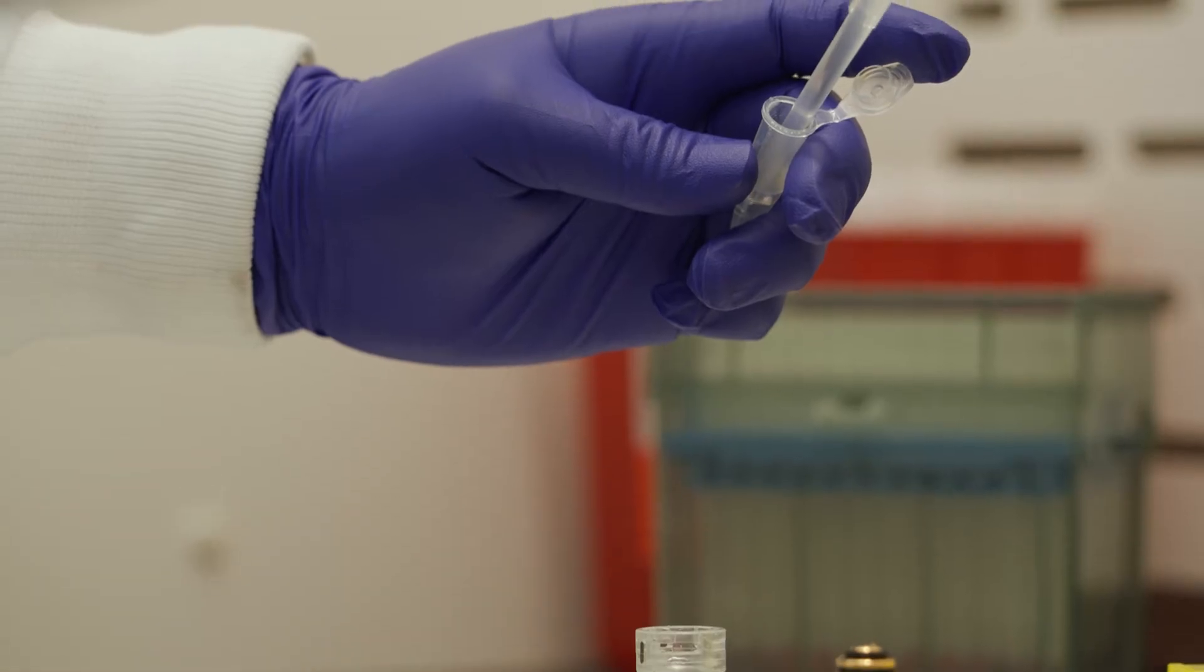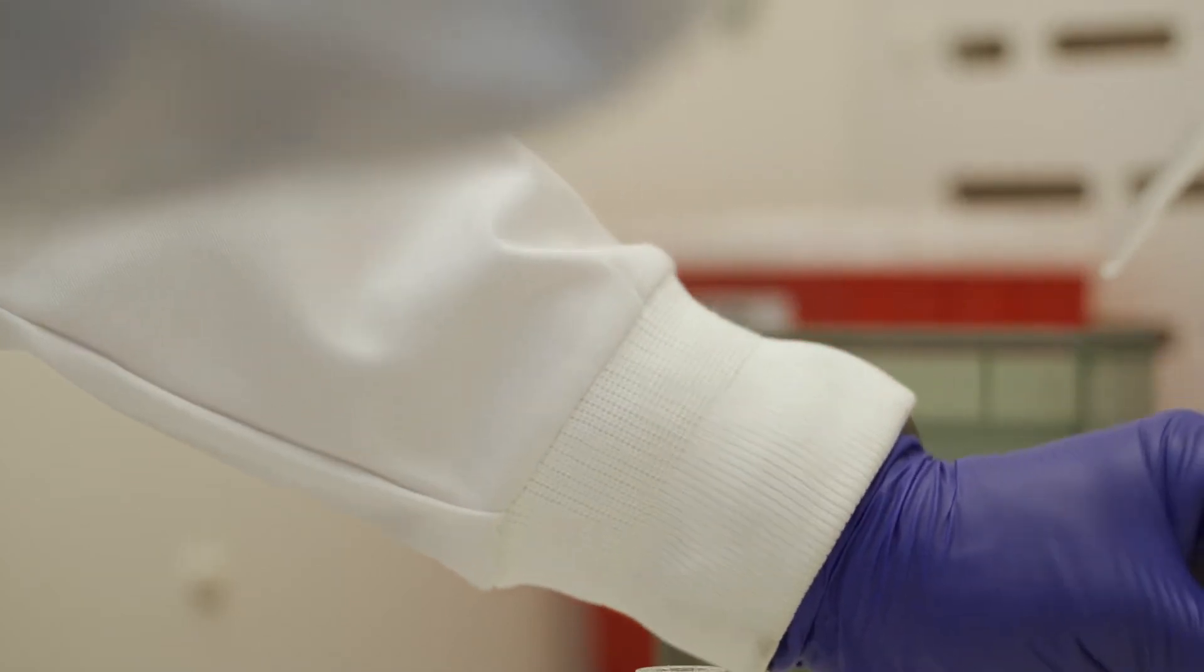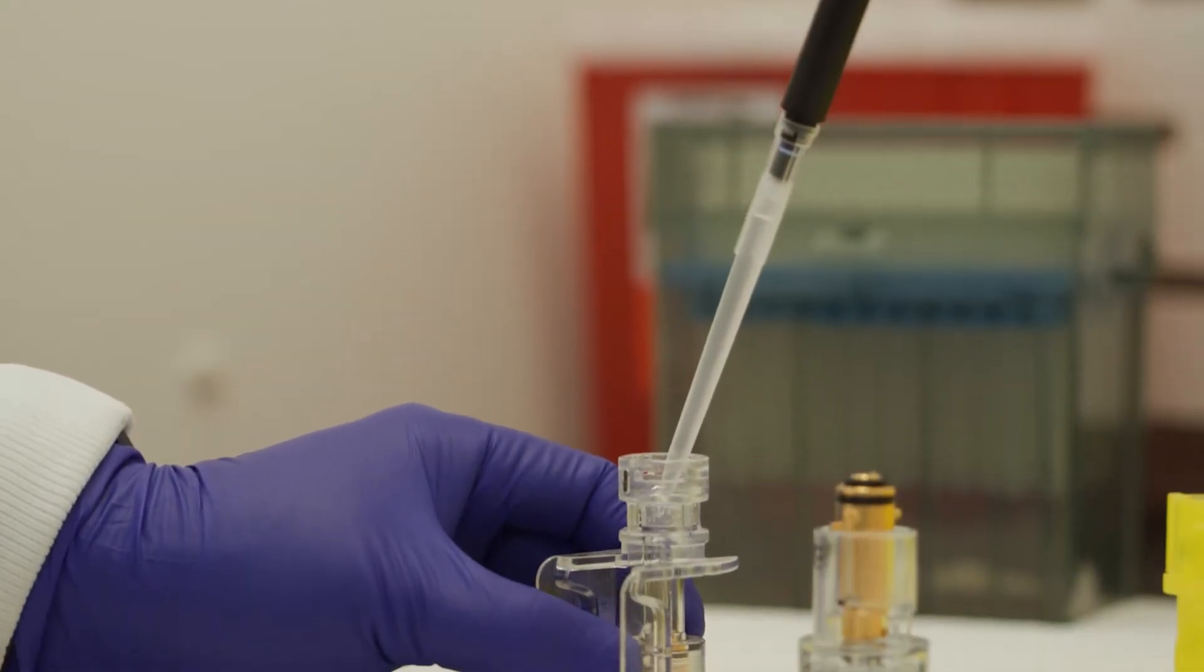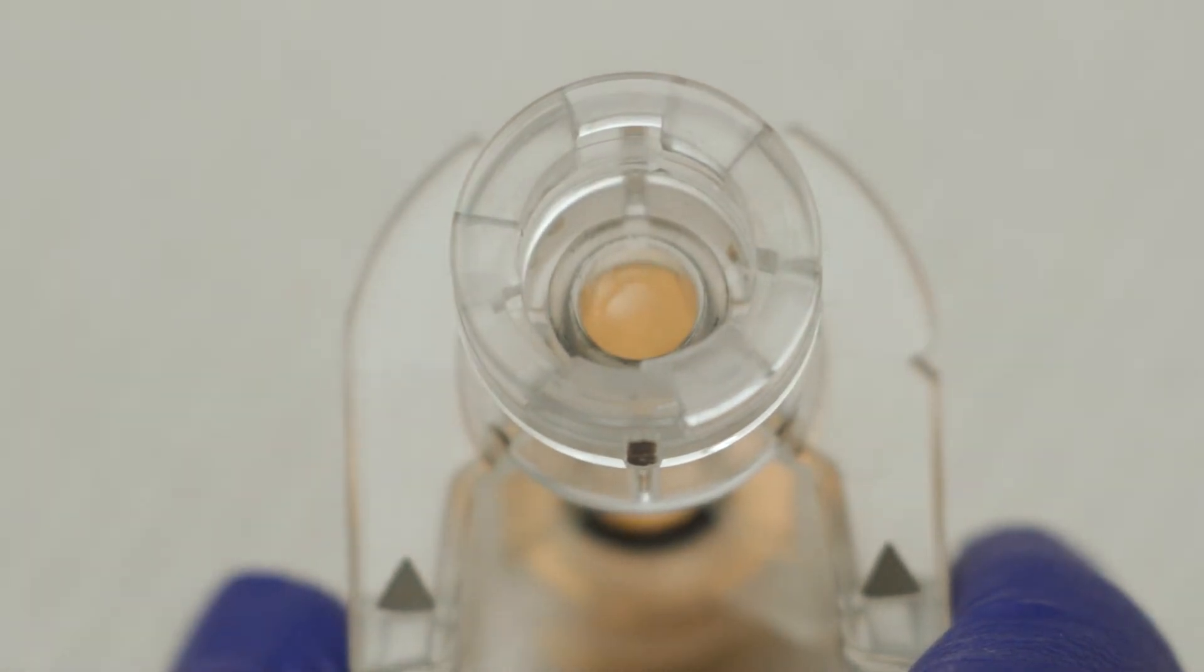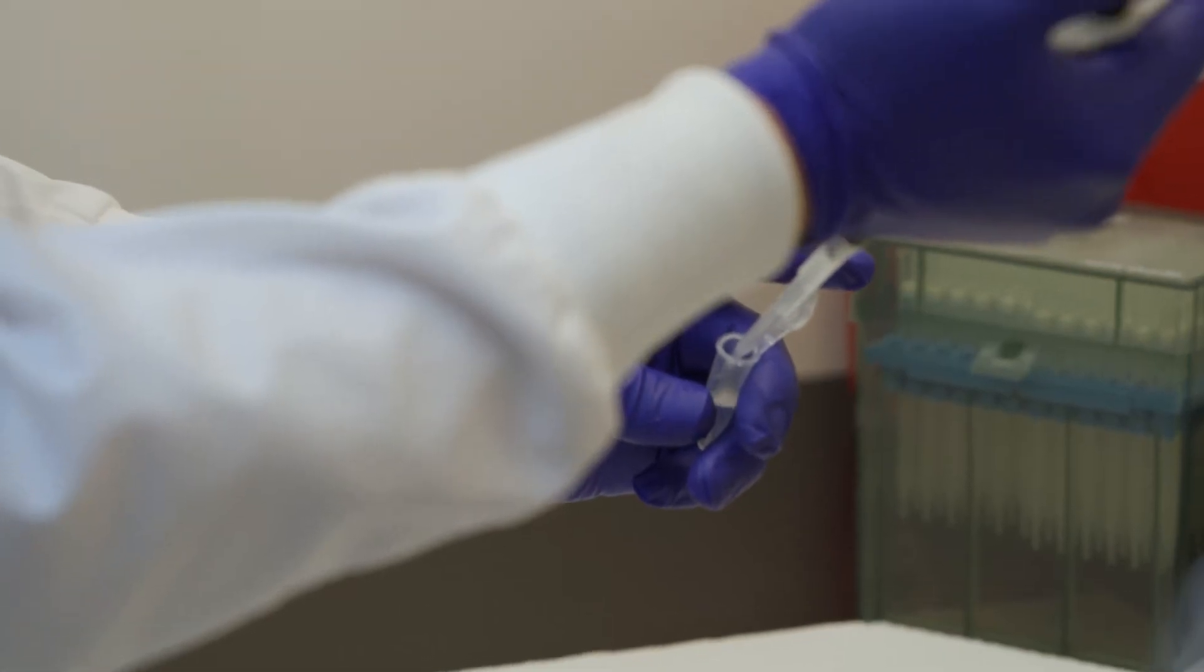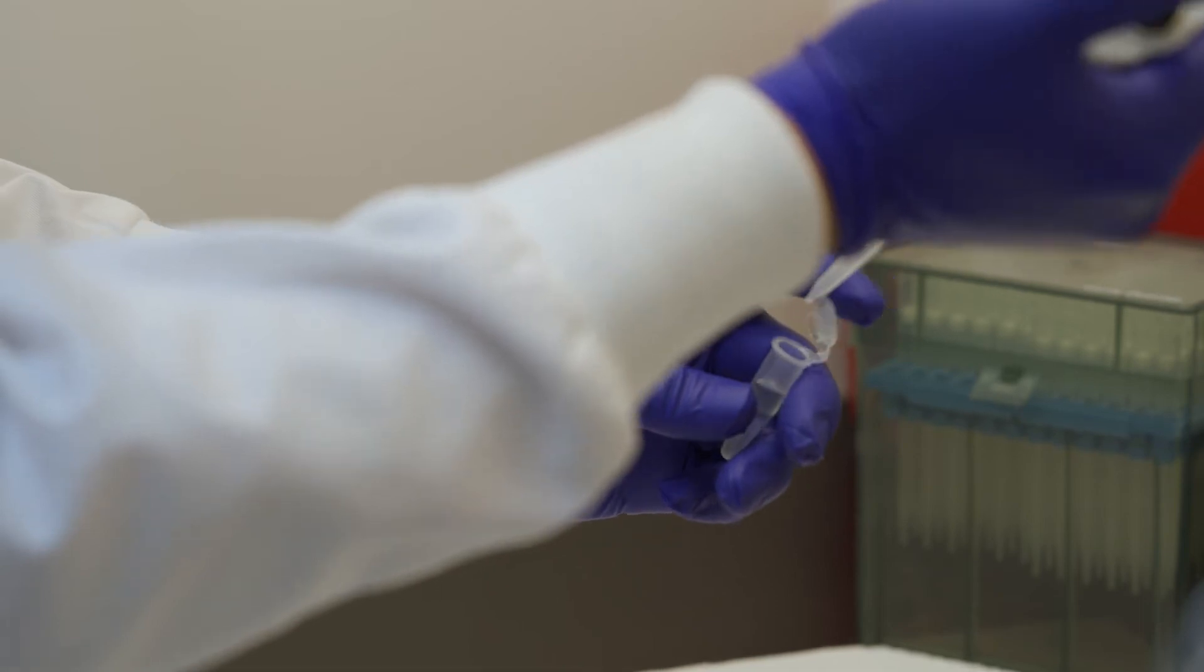First, fill the single shot chamber with approximately 1 milliliter of cell suspension by placing the tip of the pipette at the bottom of the chamber and filling from the bottom up to avoid bubble formation. The liquid should form a convex meniscus at the lip of the chamber. If additional volume is needed, use a P20 or smaller pipette.